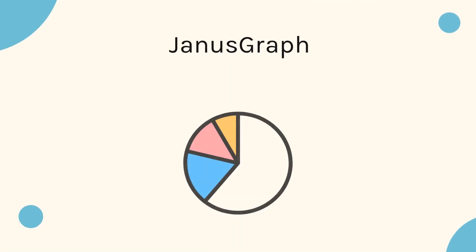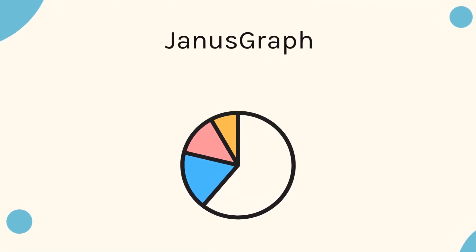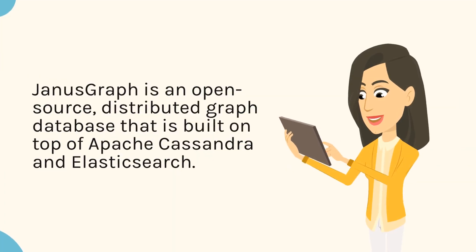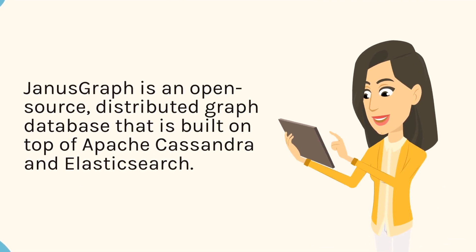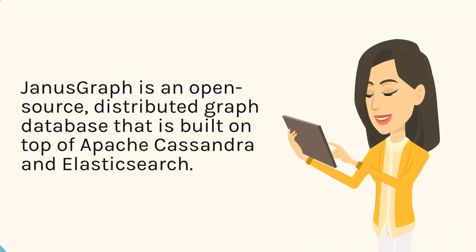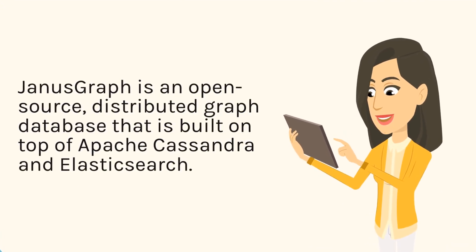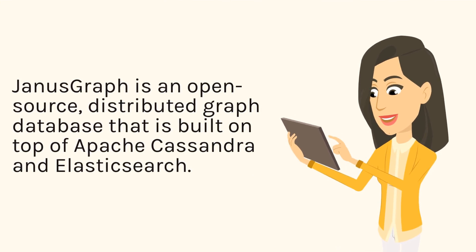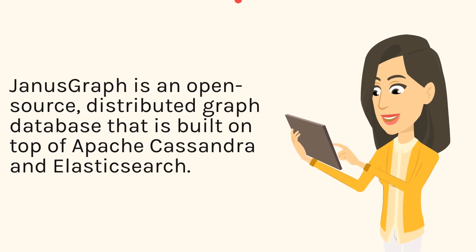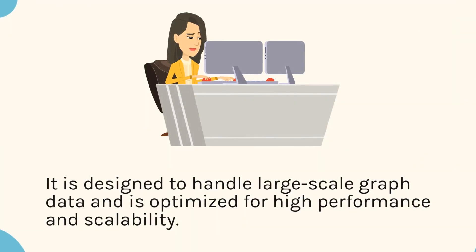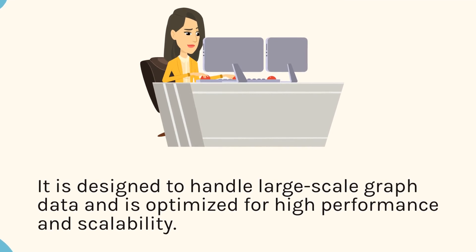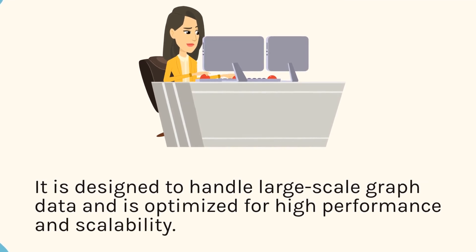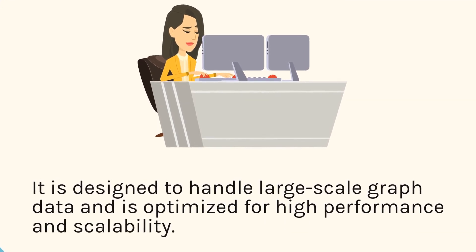JanusGraph is an open-source, distributed graph database that is built on top of Apache Cassandra and Elasticsearch. It is designed to handle large-scale graph data and is optimized for high performance and scalability.